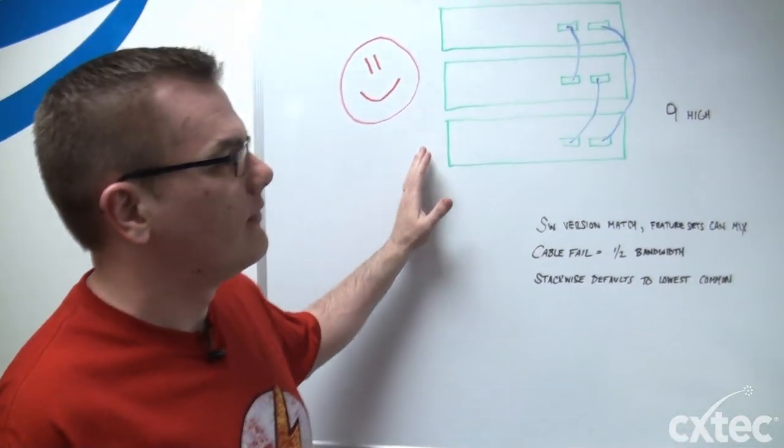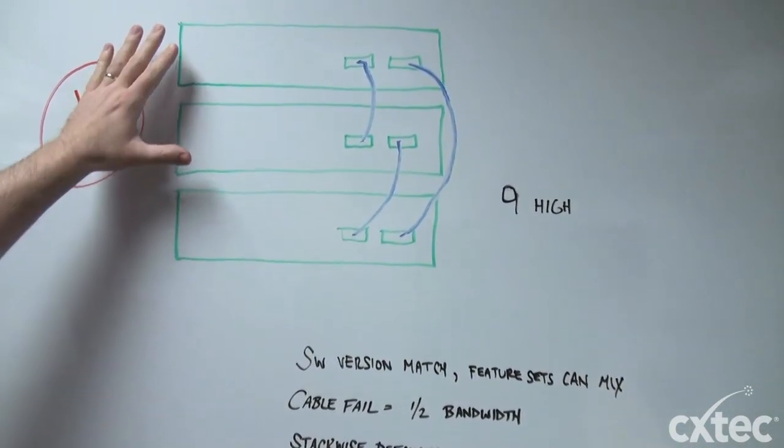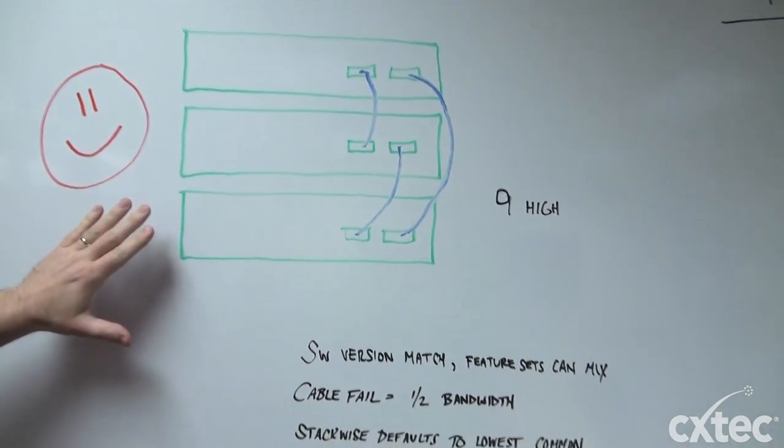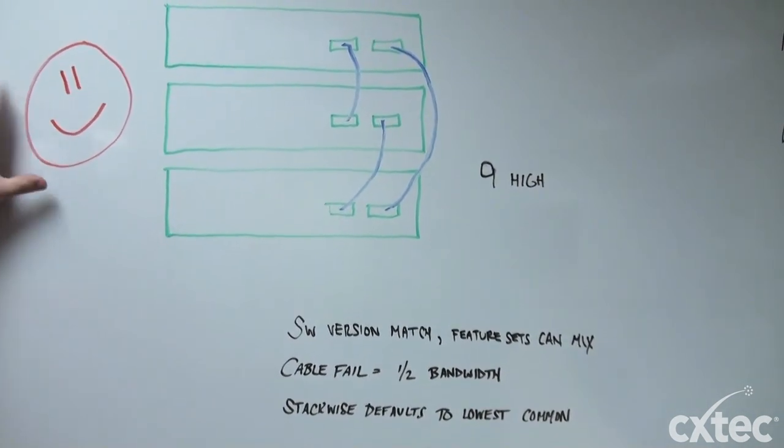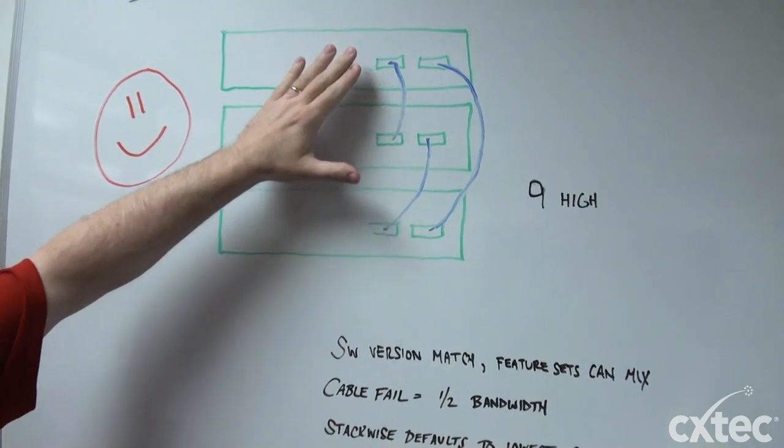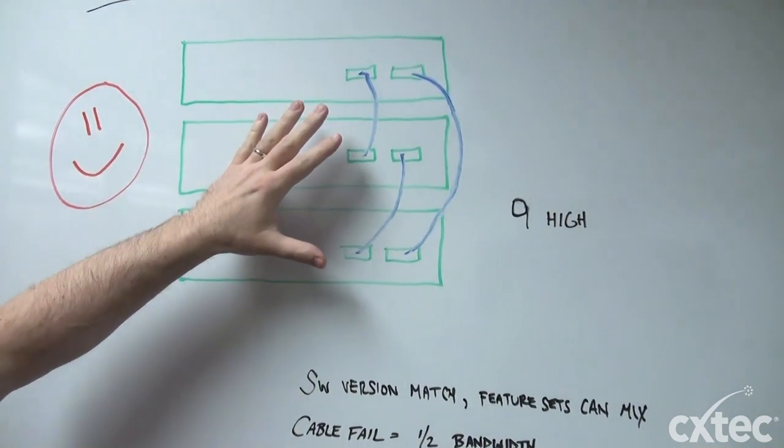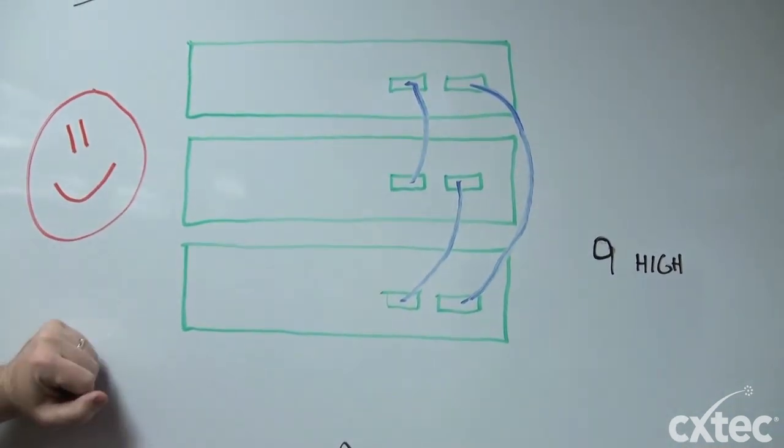I have a diagram crudely drawn up here for your perusal. Here we have an example of several switches in a stack, the happy face for the happy stack. This is an example of how you would want to cable your stack if it were three switches high.